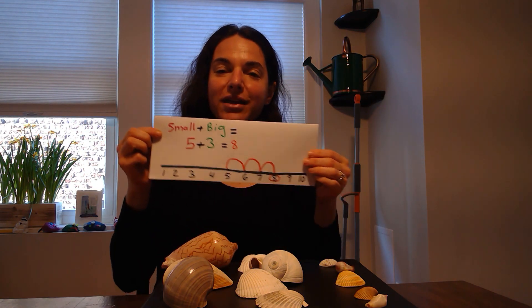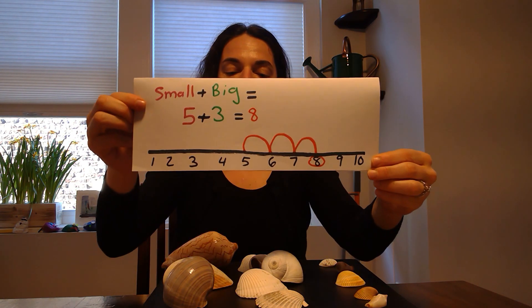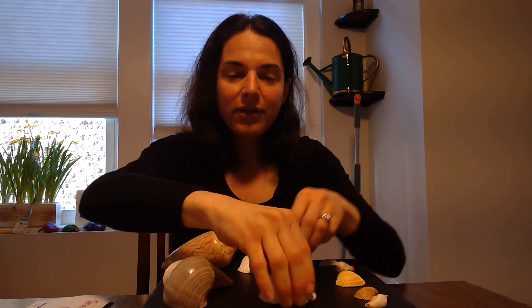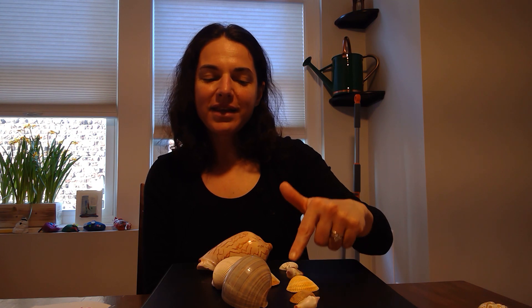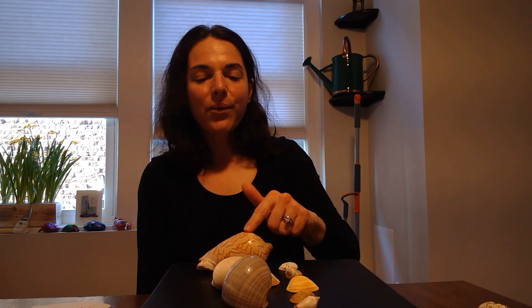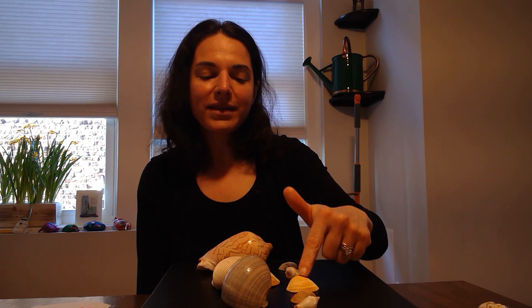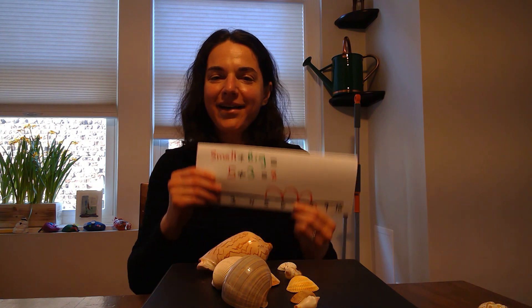I always like to double check. So to double check my answer for this number sentence, I'm going to use the shells. I'm going to remove the medium-sized shells so that I don't get confused. And since I'm adding, I'm going to be joining my groups together. I'm going to take my big shells, and I'm going to join them with my small shells. And now I'm going to count to make sure that I have 8 in all. 1, 2, 3, 4, 5, 6, 7, 8. And I got 8 again.